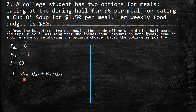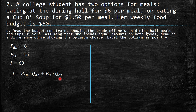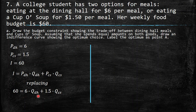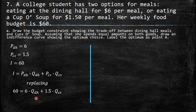Now, this is your income. The money you spend in the dining hall — which is the price times the quantity of the dining hall — plus the price of soups times the quantity of soups gives you your total spending. Replacing: income equals $60, price of the dining hall is $6, and the price of soup is $1.50. This is one equation with two unknowns, so it cannot be solved alone.